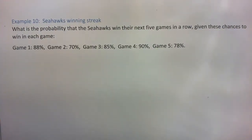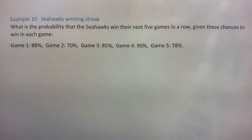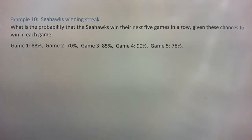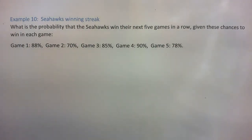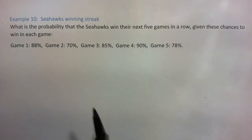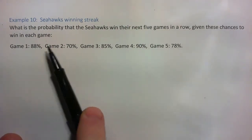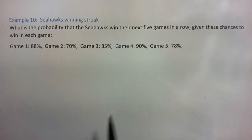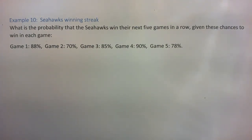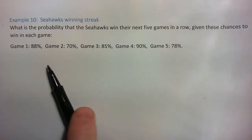So if we look at example 10: sometimes sports fans get annoyed with a good team that they're not winning all the games in a row. But let's see how difficult this is. We've got these five games, and these are the probabilities of the Seahawks winning each game — so they're most likely going to win each game on their own. But what's the probability that they win all the games in a row?